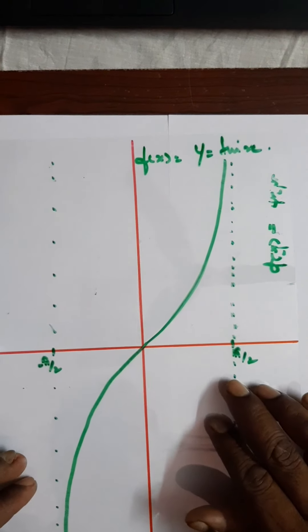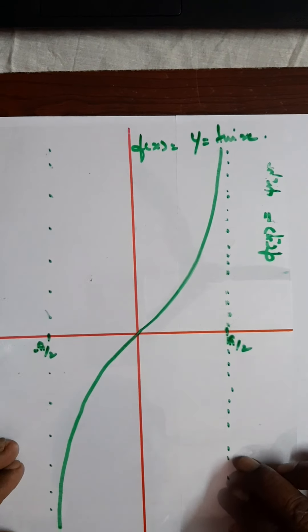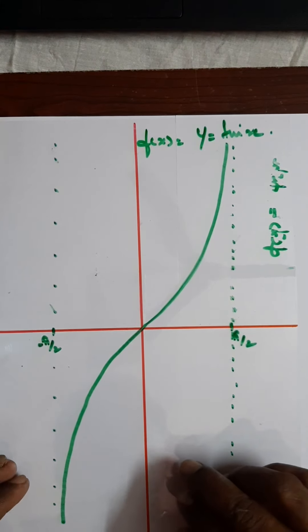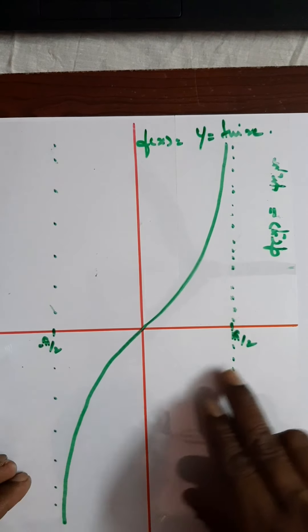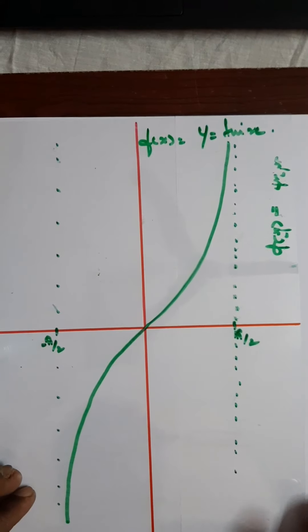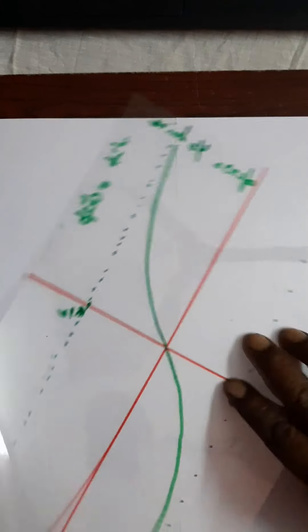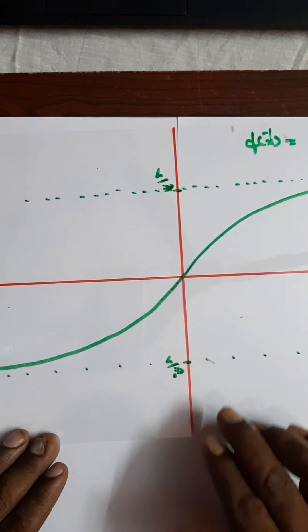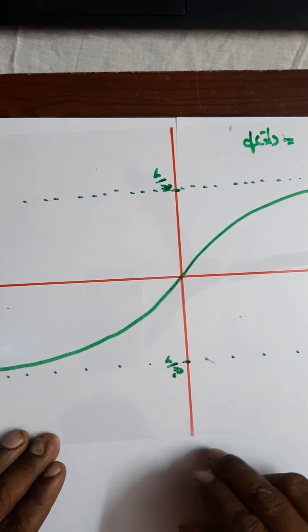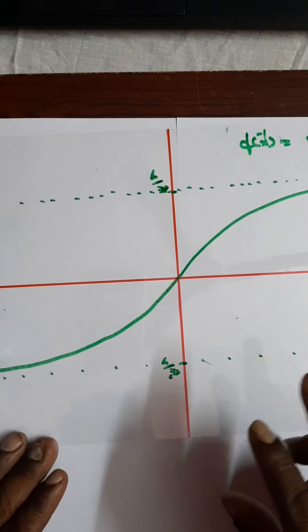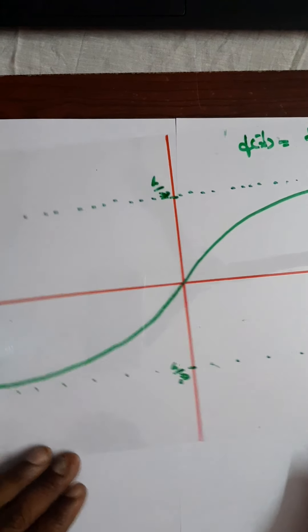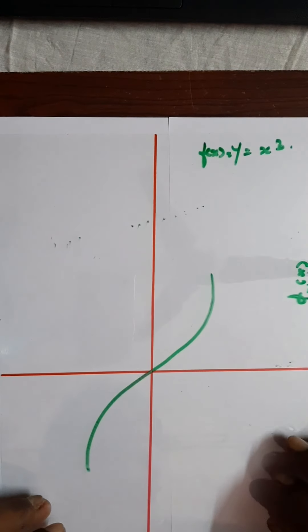Next, f(x) = tan(x), with x in the interval (-π/2, π/2). The inverse of this graph — f inverse of x = tan inverse of x — is obtained very simply. No need to take much time; within a few seconds we can find it.